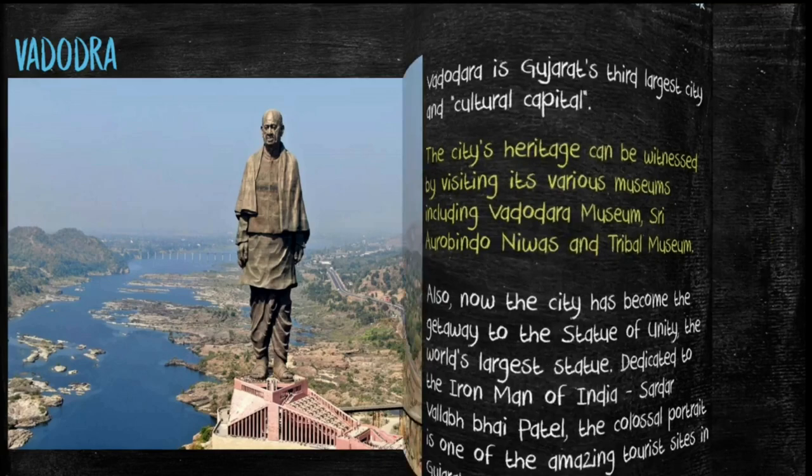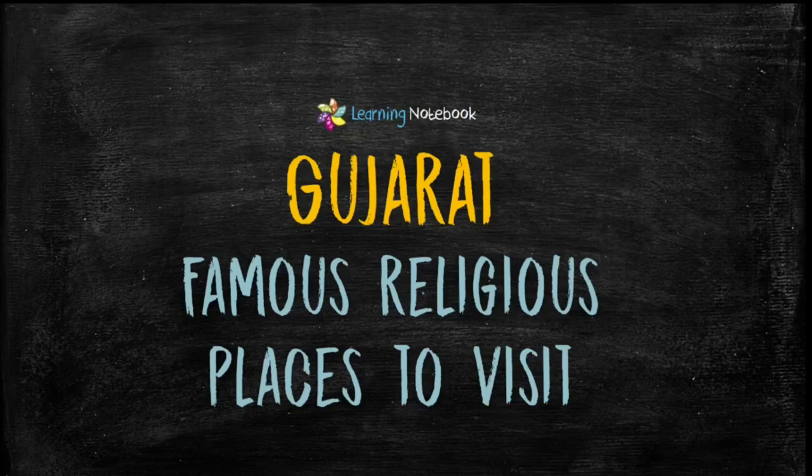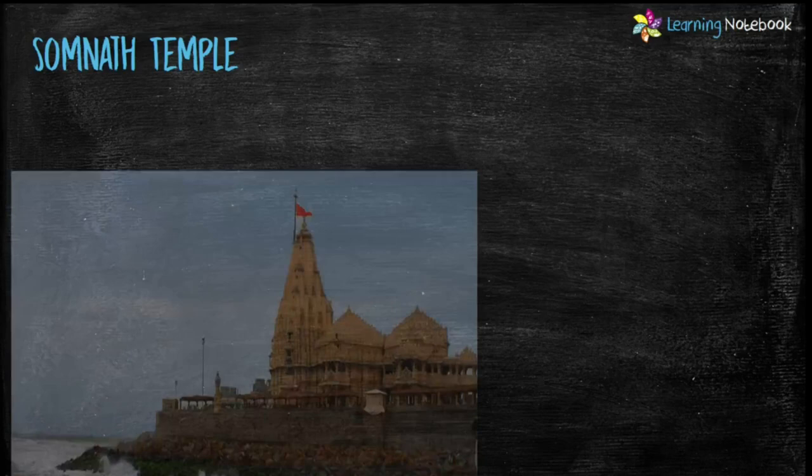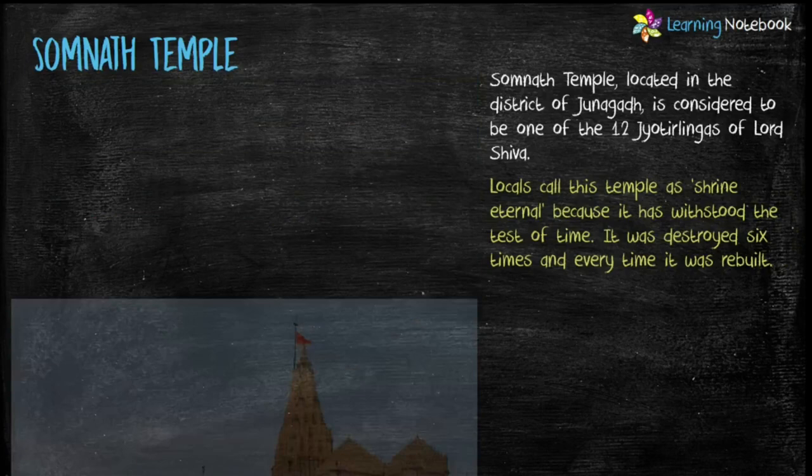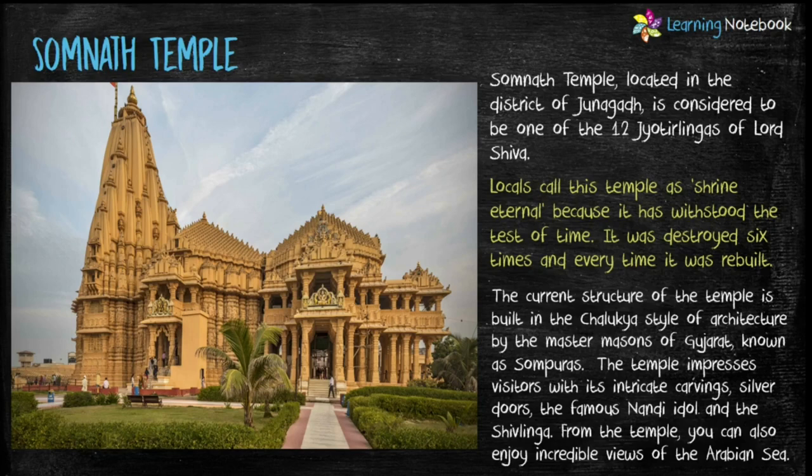Now let's learn about the famous religious places to visit in Gujarat. The first religious place is Somnath Temple. This temple is located in the district of Junagadh and is considered to be one of the 12 Jyotirlingas of Lord Shiva.